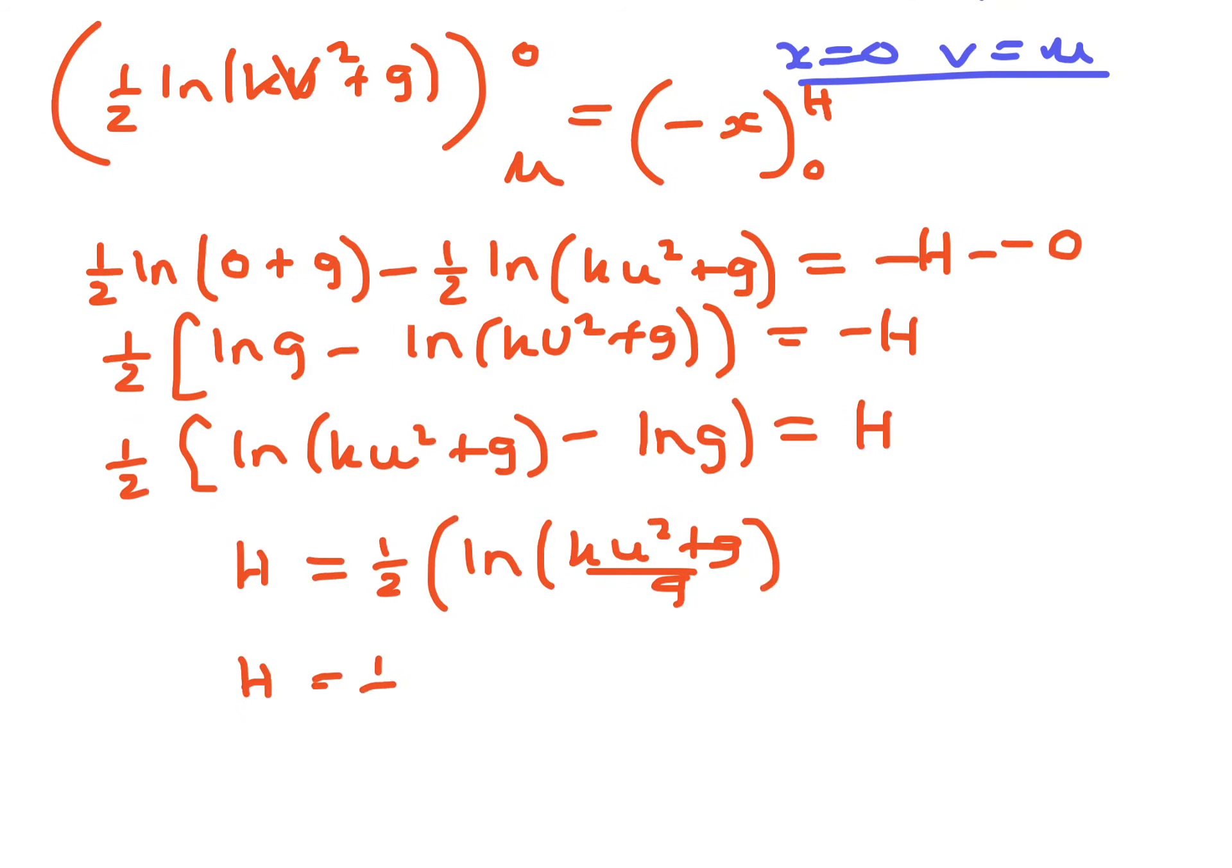Which sometimes you'll see it written as a half ln of ku squared over g plus 1, when you split the denominators.